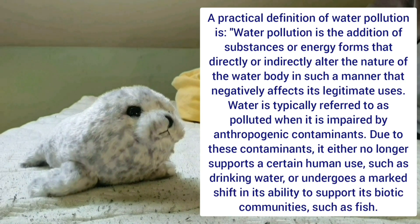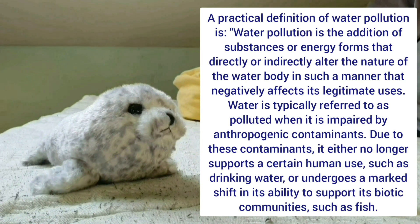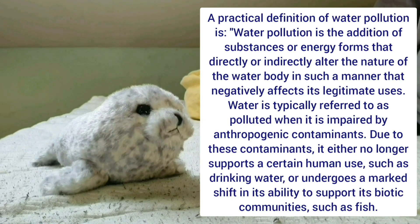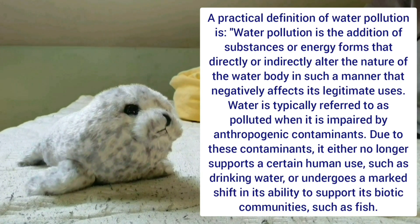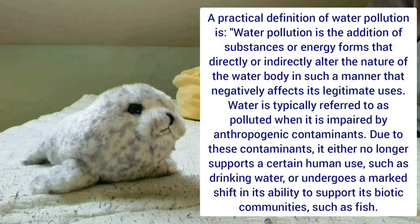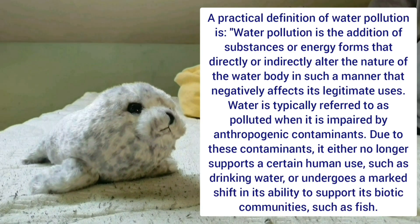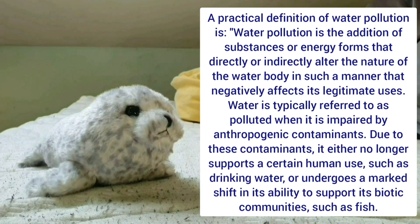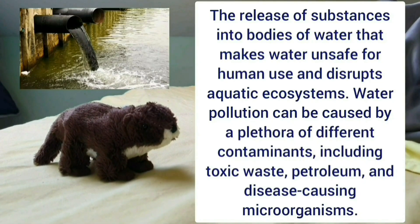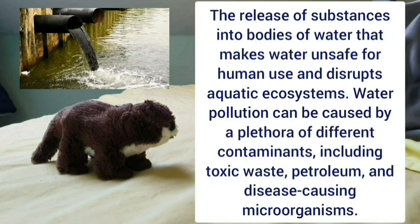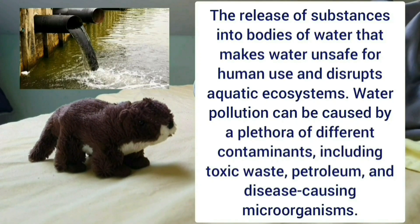A practical definition of water pollution is: the addition of substances or energy forms that directly or indirectly alter the nature of the water body in such a manner that negatively affects its legitimate uses. Water is typically referred to as polluted when it is impaired by anthropogenic contaminants, either no longer supporting a certain human use such as drinking water, or undergoing a marked shift in its ability to support biotic communities such as fish. Water pollution can be caused by a plethora of different contaminants, including toxic waste, petroleum, and disease-causing microorganisms.